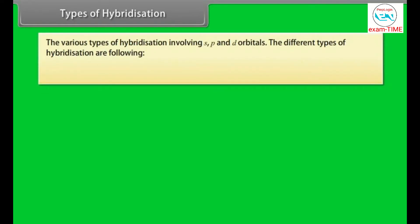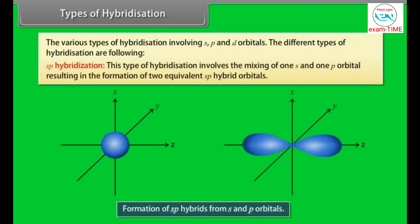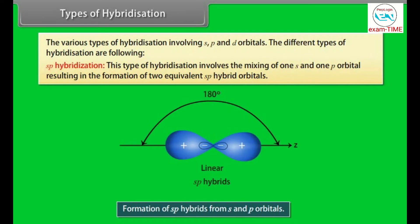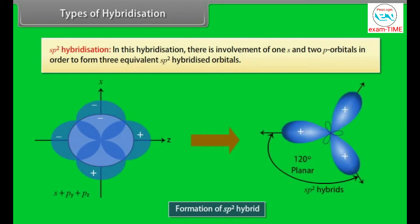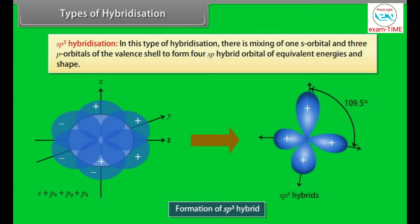The various types of hybridization involve S, P, and D orbitals. In SP hybridization, one S and one P orbital mix to form two equivalent SP hybrid orbitals. In SP2 hybridization, one S and two P orbitals form three equivalent SP2 hybridized orbitals. In SP3 hybridization, one S orbital and three P orbitals of the valence shell mix to form four SP3 hybrid orbitals of equivalent energies and shape.